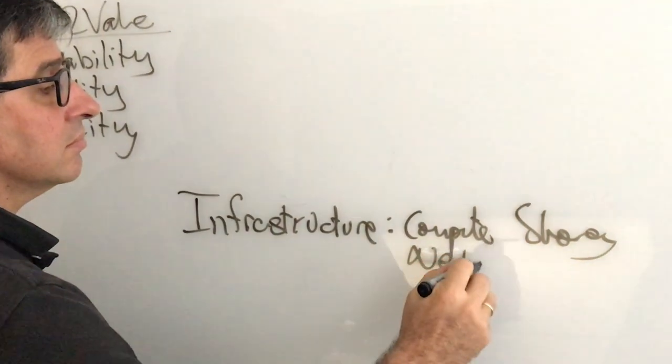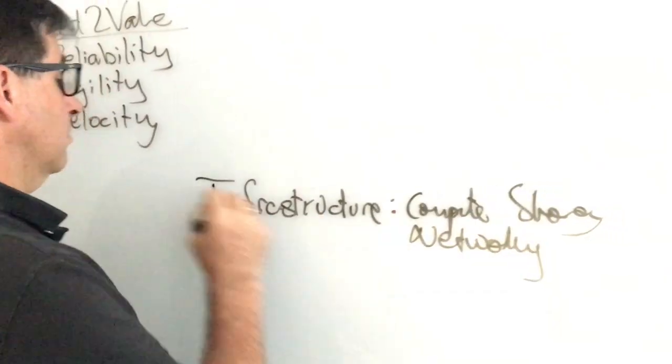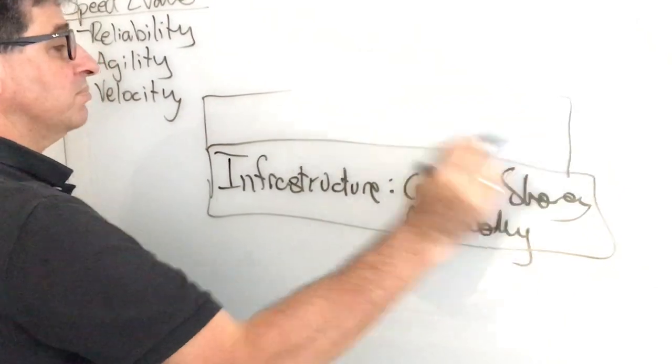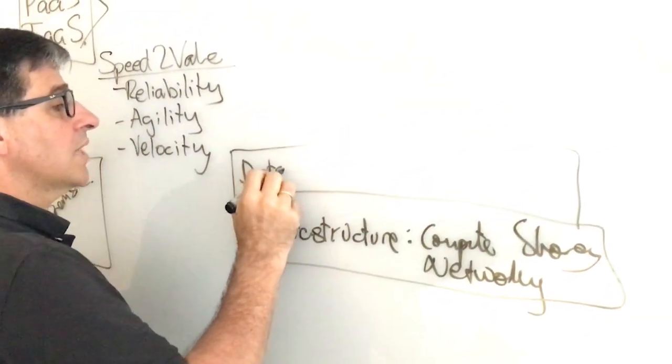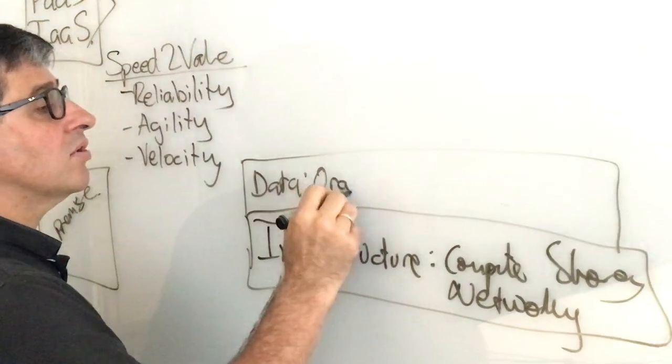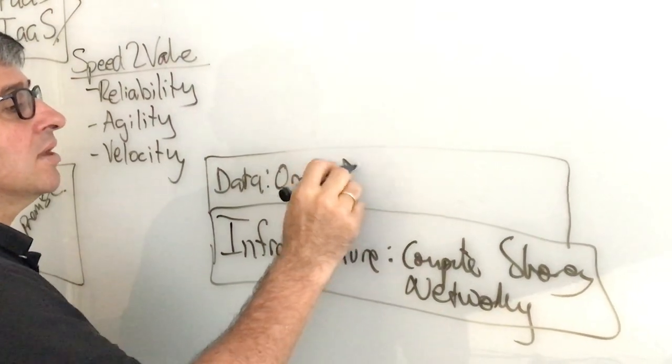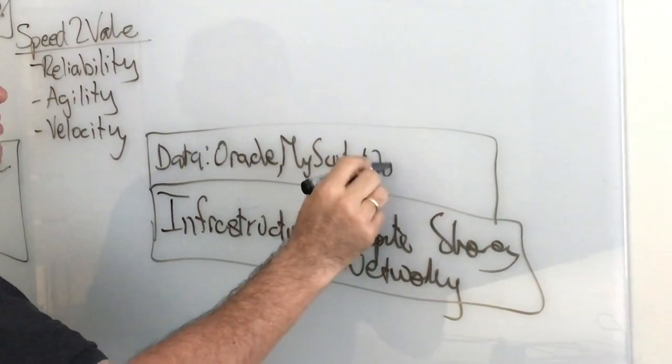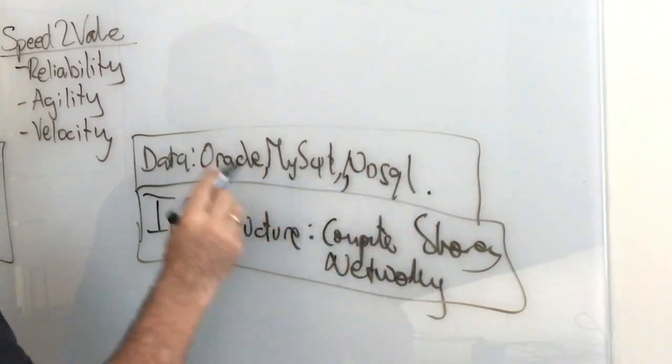The second layer is data, which includes the well-known Oracle database, MySQL, and NoSQL.